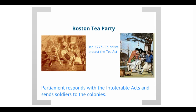The idea was that Parliament wanted to make clear to the colonists that it was the governing body and did have the authority to tax the colonists if it so chose. What the colonists did in reaction to the tea tax — or I should say what a handful of colonists in Boston did — dressing up as Native Americans, boarding the ship of the British East India Company, and dumping the tea overboard into Boston Harbor.